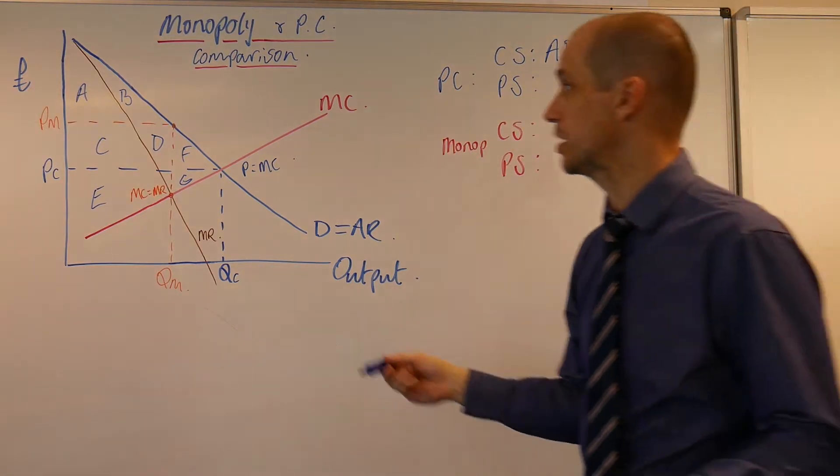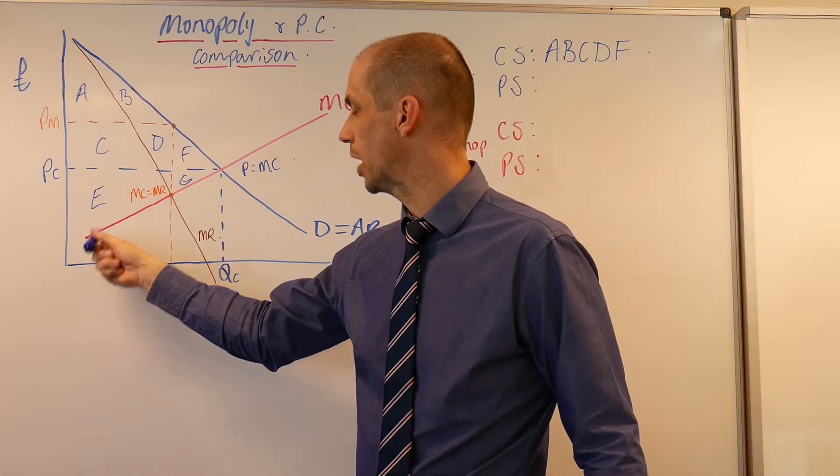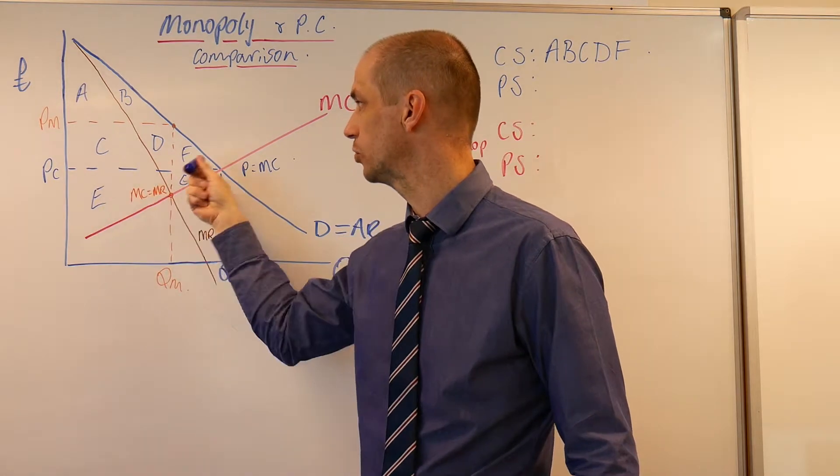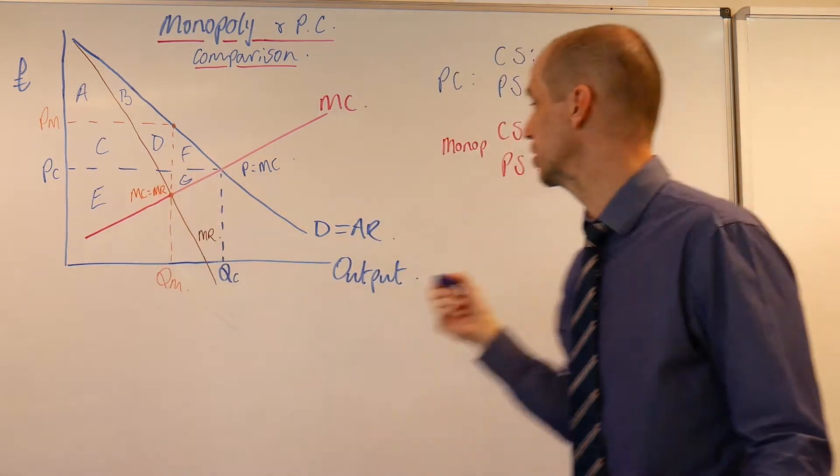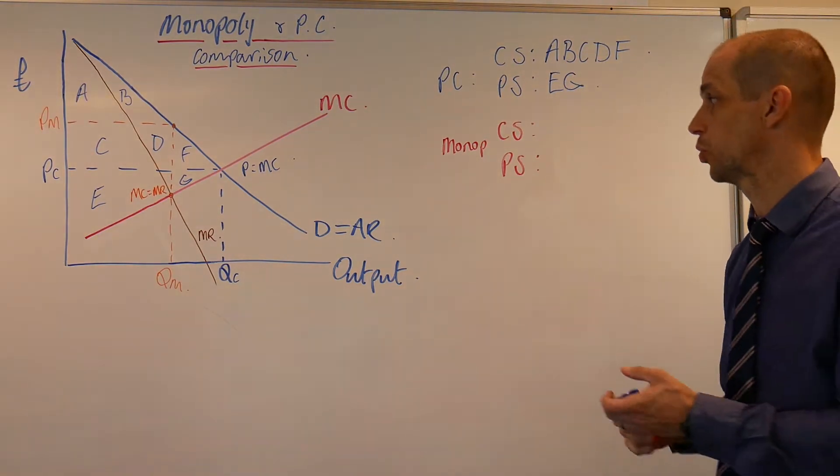Meanwhile, the marginal cost of providing each additional unit of output is lower than the price level in areas E and G, so we can see what our producer surplus is as well.